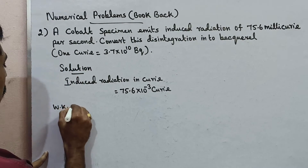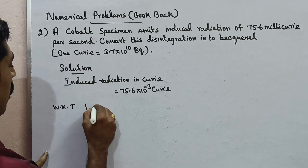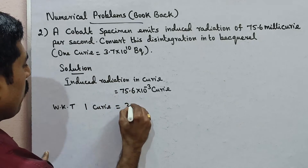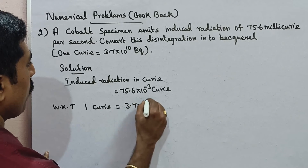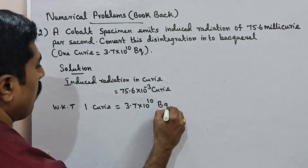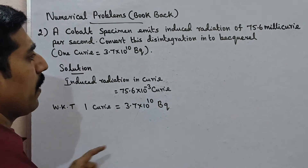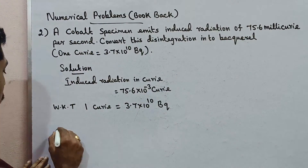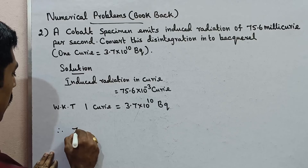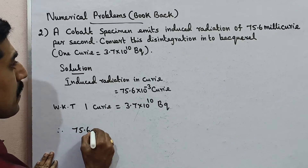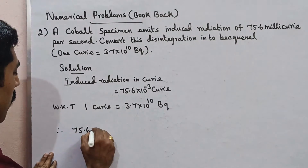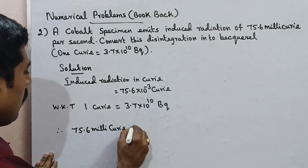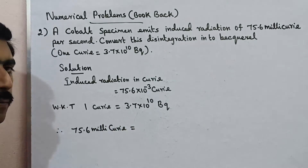Now, since we know that 1 curie is equal to 3.7 into 10 power 10 becquerel. Therefore, 75.6 millicurie is equal to — what is it?